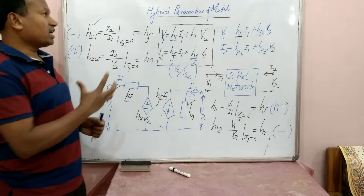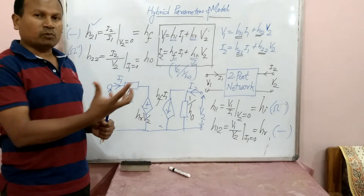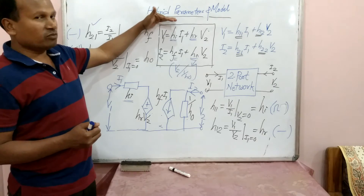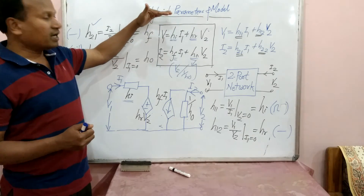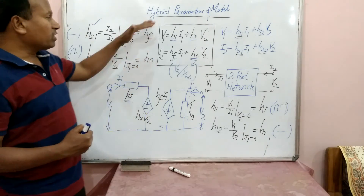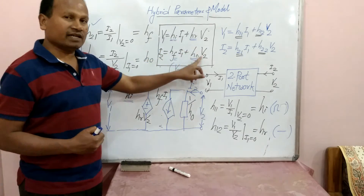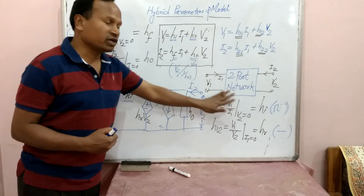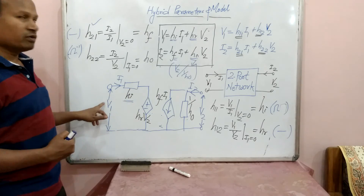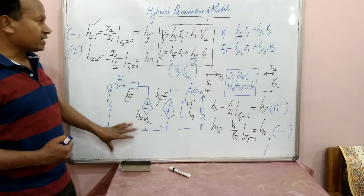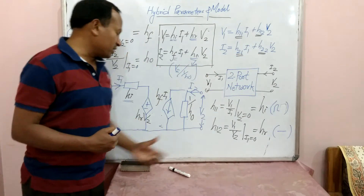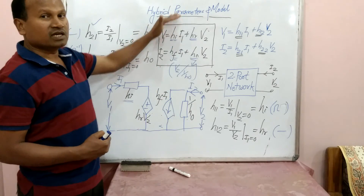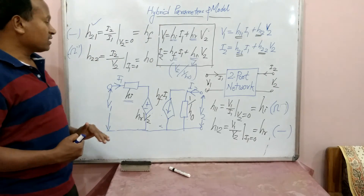To recapitulate: hybrid parameters are one of the two-port parameters. They are called hybrid because their dimensions are of a mixed nature — HI is in ohms, HO in mhos, and HF and HR are dimensionless. Based on the two standard equations relating the four variables of the two-port network, we draw the hybrid model: the input port uses a series impedance and a dependent voltage source, the output port uses a dependent current source in parallel with an admittance, forming the standard hybrid equivalent circuit.